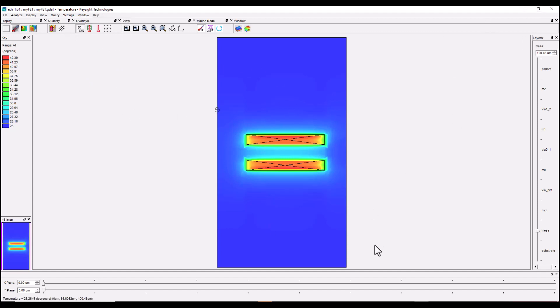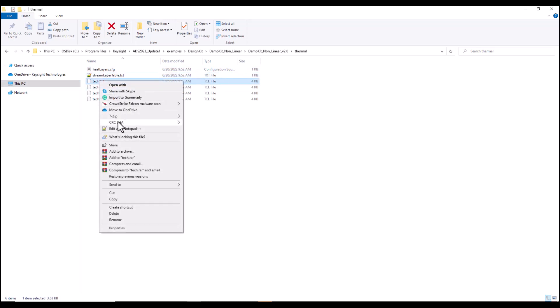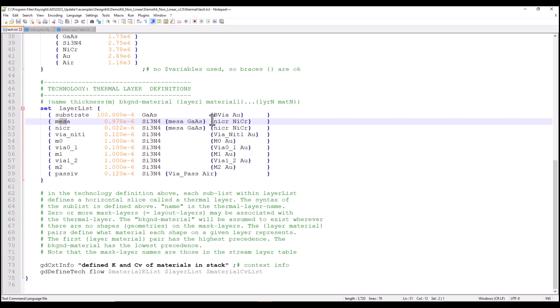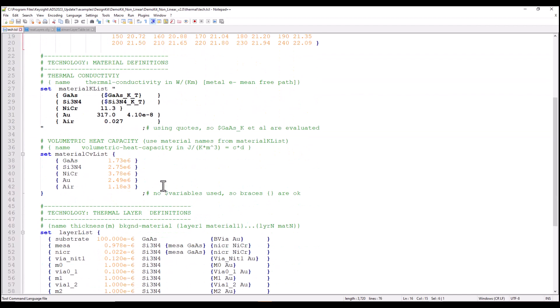Now before we end this video I would like to show the three files which we talked about. In here under the thermal folder of the PDK I'm using you can notice tech.tcl, heat layer configuration and stream layer table. And here if you open tech.tcl which is basically a TCL file you can read out the information here.